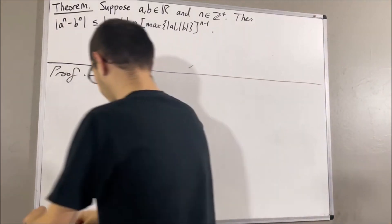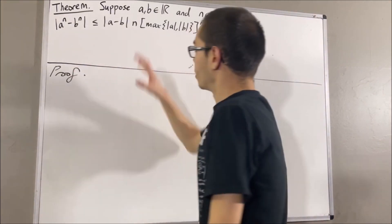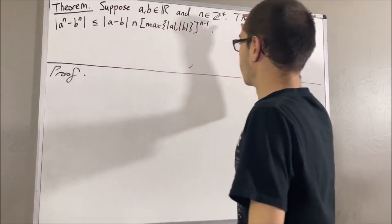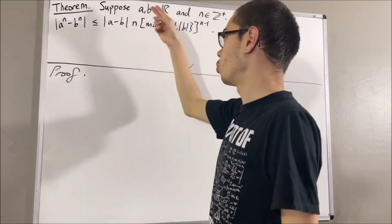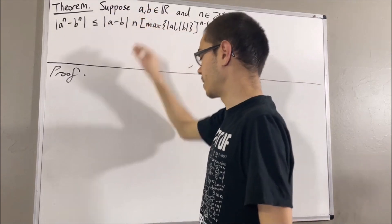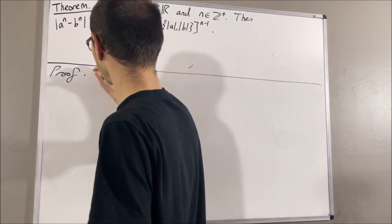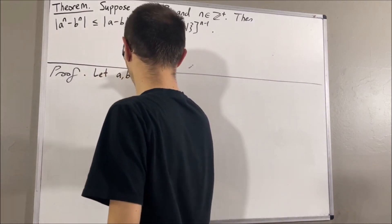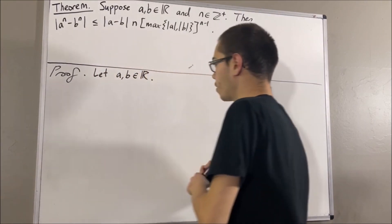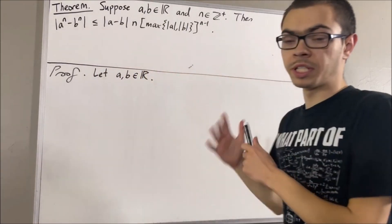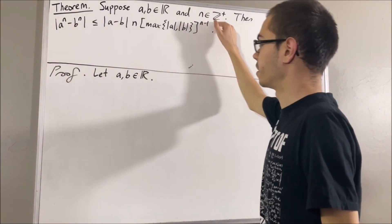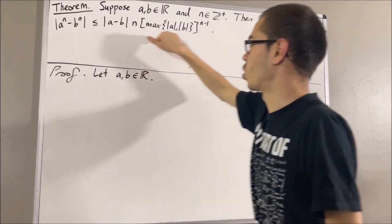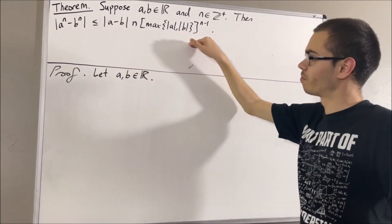To prove this theorem, we're going to start out by giving ourselves two real numbers a and b. From here, we're going to proceed by induction to show, for all positive integers n, this inequality is true.